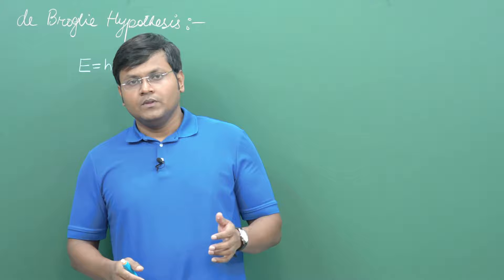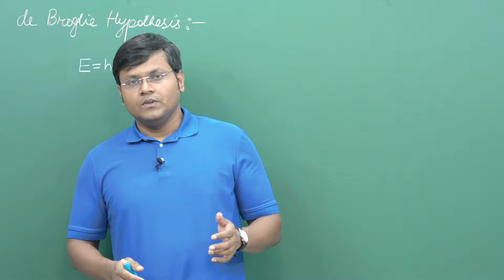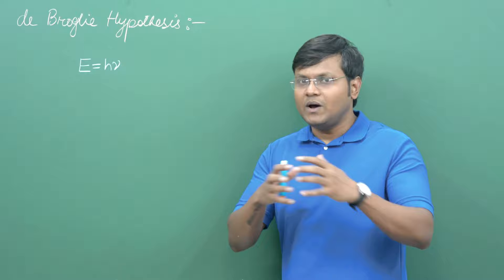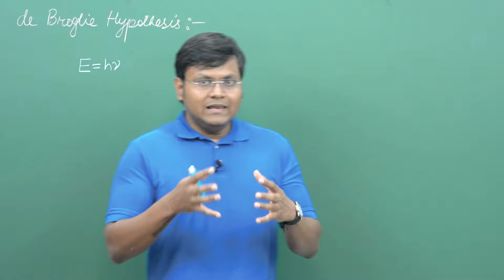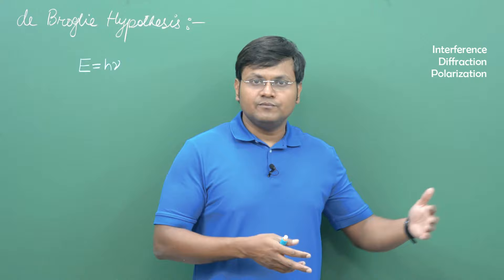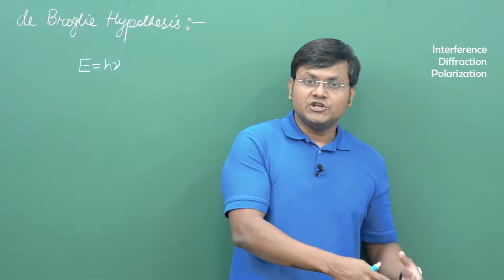So the question arises: what is light really? Is it a photon - a particle that can interact with other particles just like particles interact? Or is it a wave that oscillates and propagates through space? Because light still satisfies properties like interference, diffraction, and polarization, and these phenomena can only be explained by its wave characteristic.